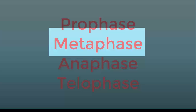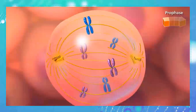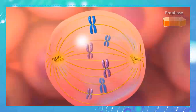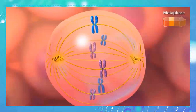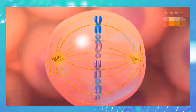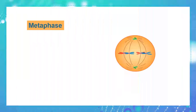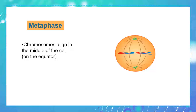Let's continue with the second phase, metaphase. Don't forget to take notes and describe the steps. As you've seen during metaphase, chromosomes align in the middle of the cell on the equator, in something called the metaphase plate.